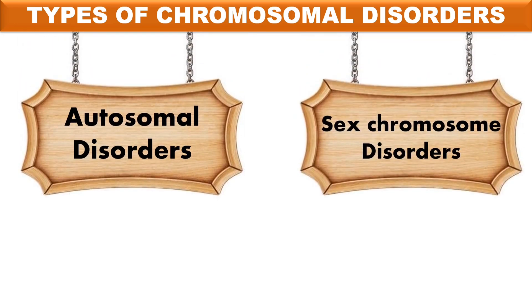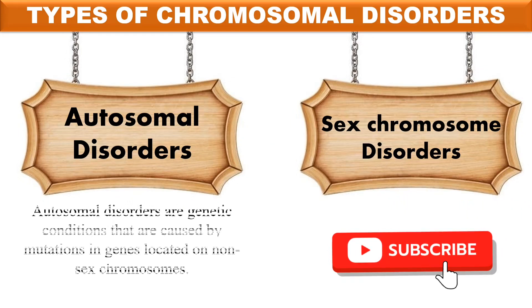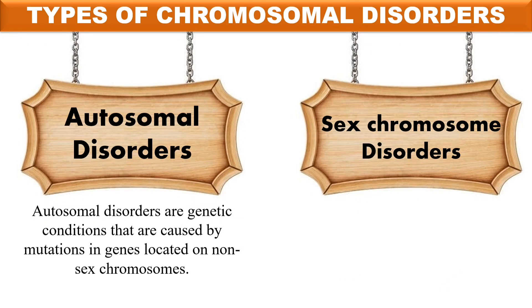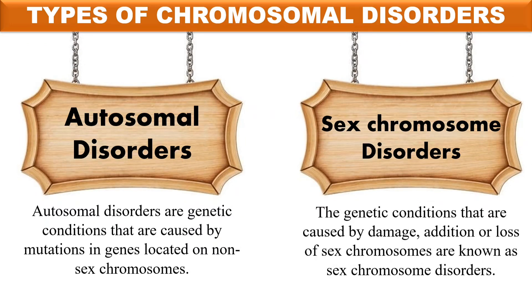Now the types of chromosomal disorders. Generally we have two types: first is autosomal disorder and second is sex chromosome disorder. Autosomal disorders are those due to mutation in autosomes. Humans have 46 chromosomes total, out of which 44 are autosomes while the remaining two, X and Y, are sex chromosomes. Mutation in the 22 pairs of autosomes gives an autosomal disorder, while mutation in the sex chromosome gives a sex chromosomal disorder.